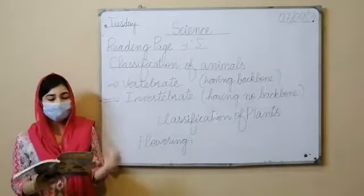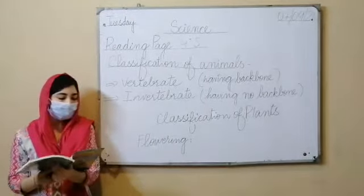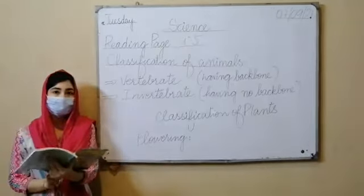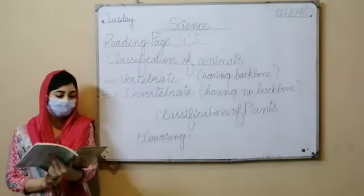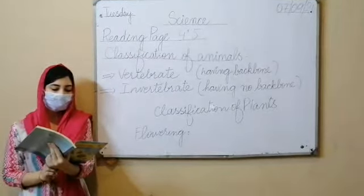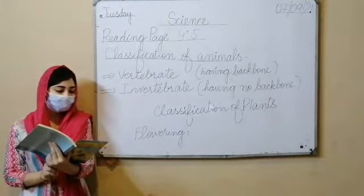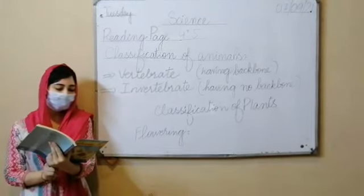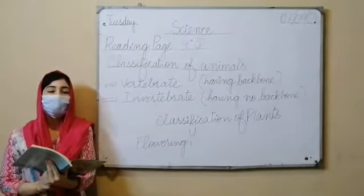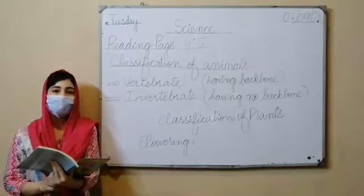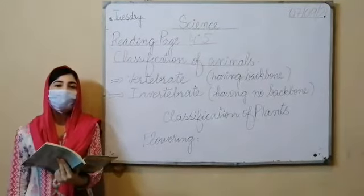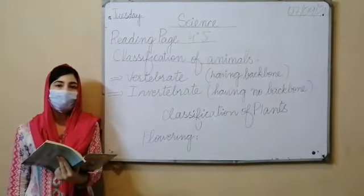Let's start. Classification of animals. Animals are divided into two major groups on the basis of the vertebral column and backbone.